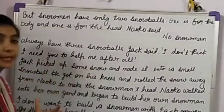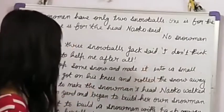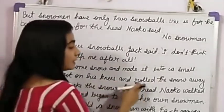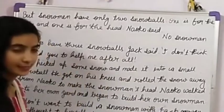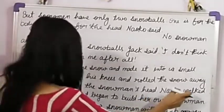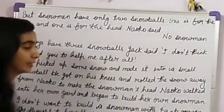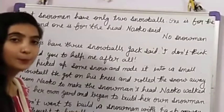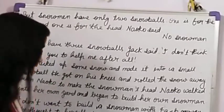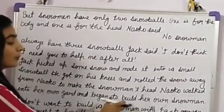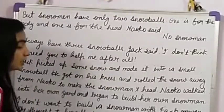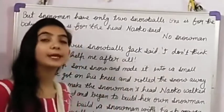Jack picked up some snow, made it into a small snowball, got on his knees, and rolled the snow away from Naoko to make the snowman's head without her help. Naoko then walked into her own yard and began to build her own snowman. She thought to herself, 'I am going to make my own snowman.'